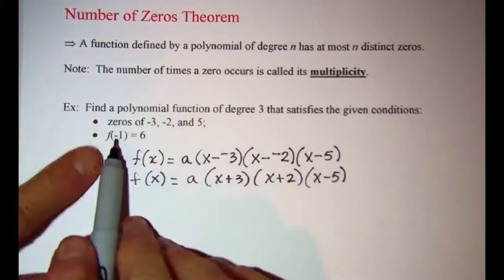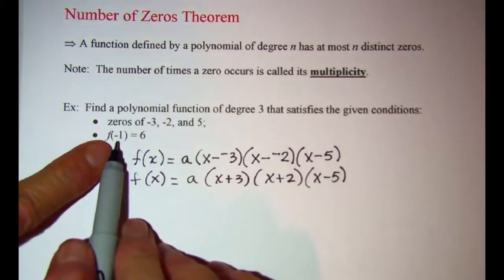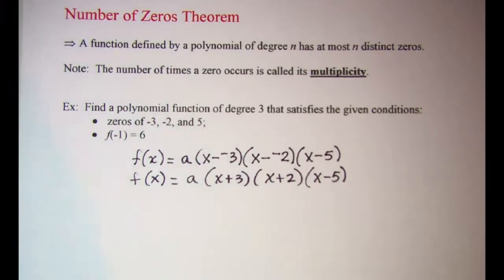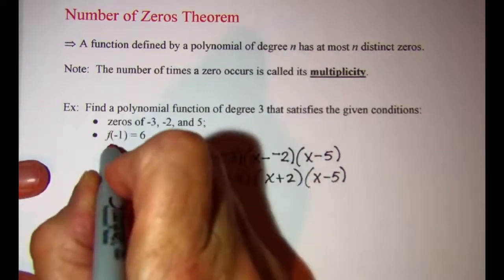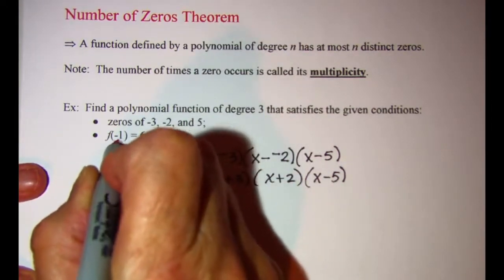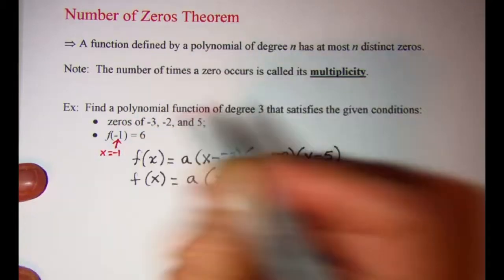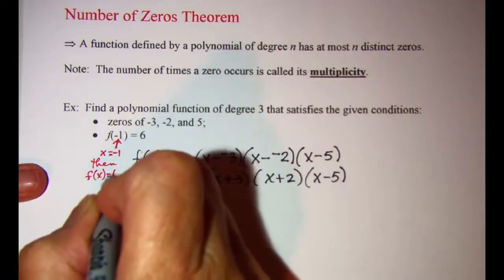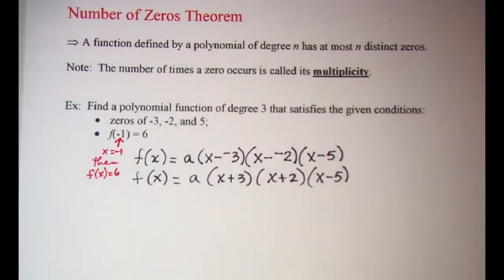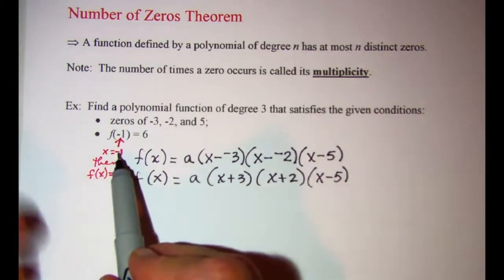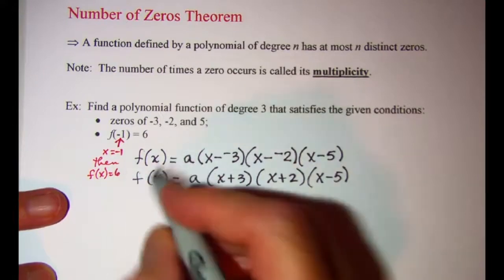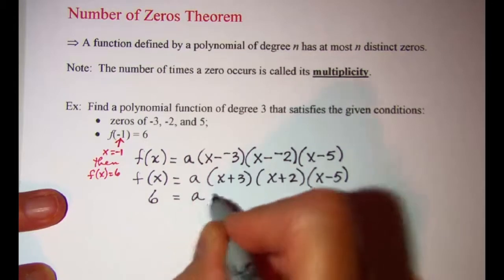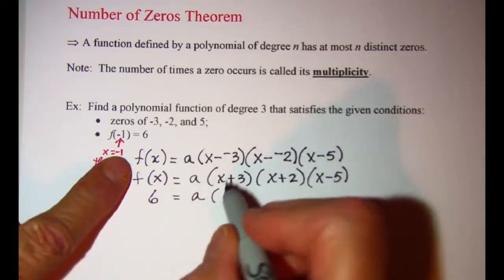The reason we were told f of negative 1 equals 6 is so we can find the value of a. This says that when x is negative 1, then f of x equals 6. So I'm going to substitute negative 1 in for x and put 6 in for f of x. We don't know a yet, but substituting negative 1 for x gives us: a times negative 1 plus 3, times negative 1 plus 2, times negative 1 minus 5.